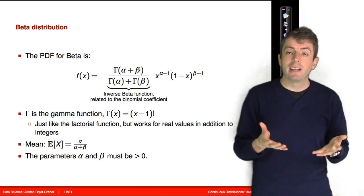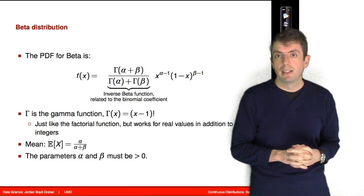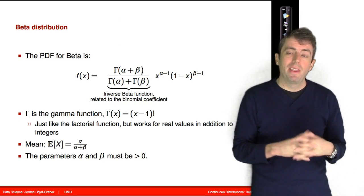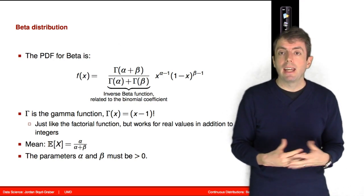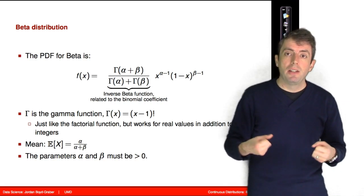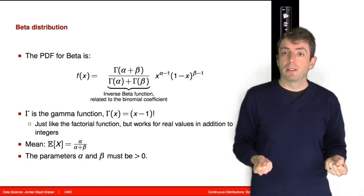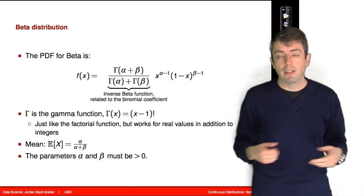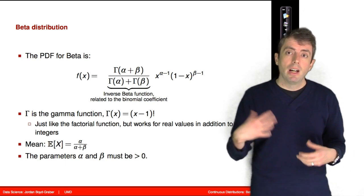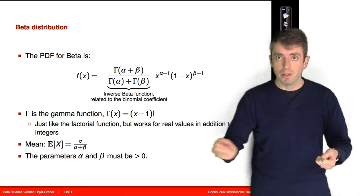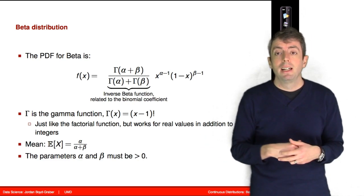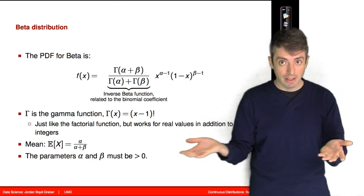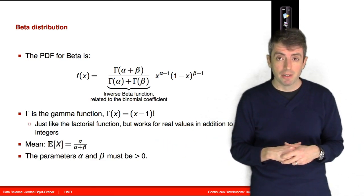Let's now return to the normalization term in front. You see the Greek letter gamma there — that is called the gamma function. The gamma function is a generalization of the factorial function, but unlike the factorial function which is only defined for integers, the gamma function also works on real numbers. This is why you can have arguments like 0.5, which are possible values of alpha and beta, being passed into the gamma function.